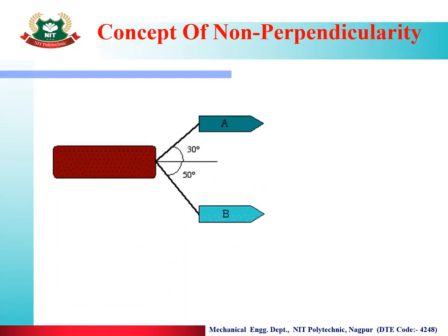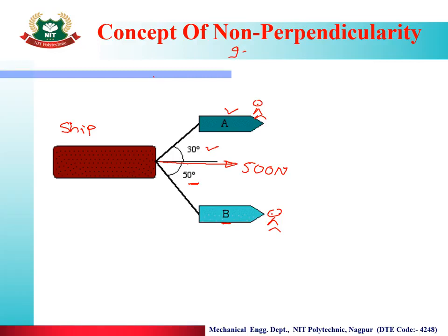As you can see here in red color, this is a ship (jahaj) in water being pulled. There is one person A and another person B who are pulling it. The force applied is 500 Newton. Person A is pulling at 30 degree inclination and person B is pulling at 50 degree inclination. The addition of these two angles is not 90 degrees, so this comes under the topic of non-perpendicularity.